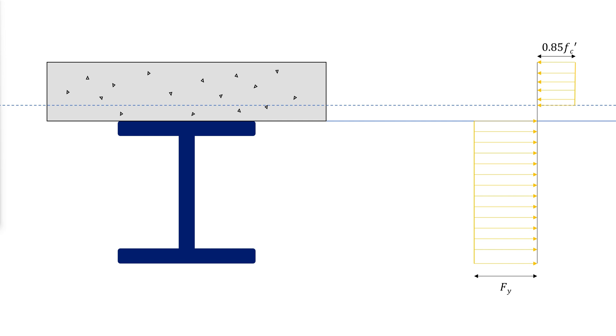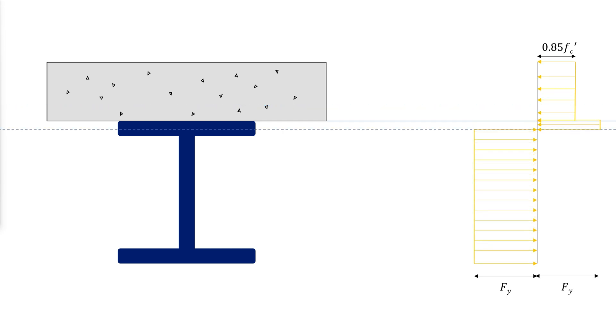The second is with the neutral axis in the steel top flange. The concrete stress block extends the full depth of the slab.